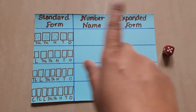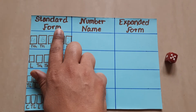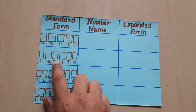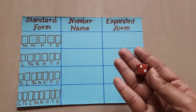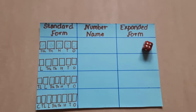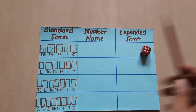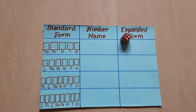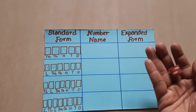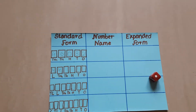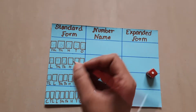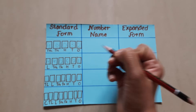For the next activity, you are going to make a table with three columns: standard form, number name, and expanded form. You also need a dice. You are going to roll the dice, and whatever number comes — like right now it is four — you write four. Then roll again: four, four. Keep rolling and if the teacher says 'boom', you write zero. So you keep generating digits this way.